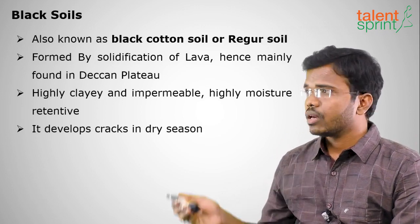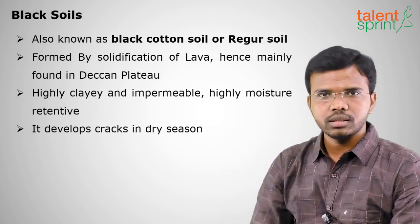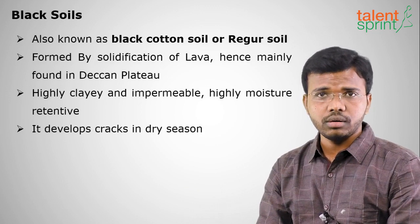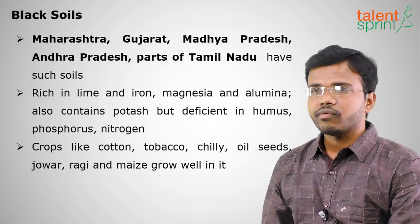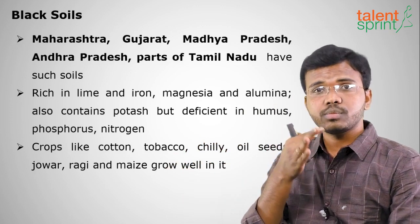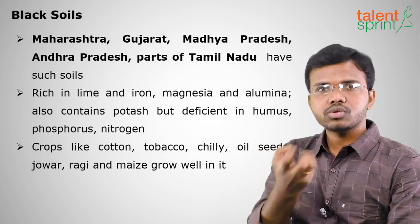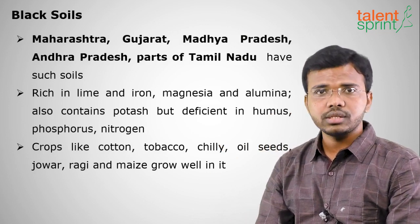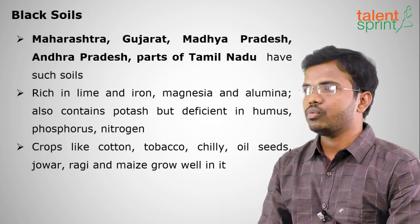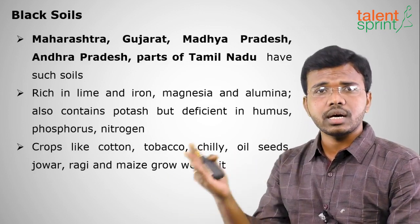Black soils are sticky because they are clay in nature and highly moisture-retentive. They develop cracks whenever there is very little water — you can see these cracks on agricultural land, particularly in black soil regions. They are found in Maharashtra, Gujarat, Madhya Pradesh, and parts of Tamil Nadu. They are rich in lime, iron, and magnesium, and aluminum. However, they are deficient in humus — organic content from decomposed plants and animals — as well as phosphorus and nitrogen. They are very suitable for cotton, tobacco, chili, oil seeds, maize, jowar, and ragi.